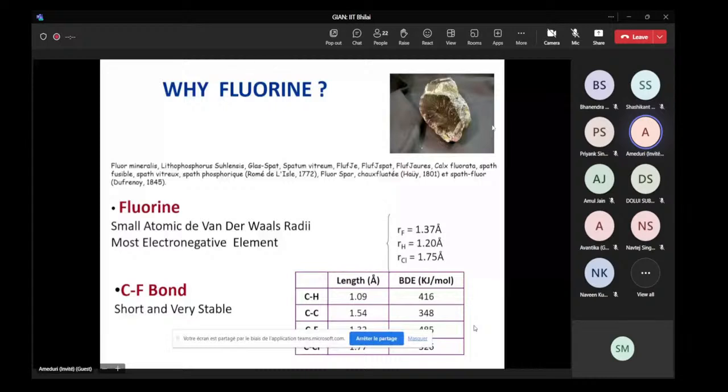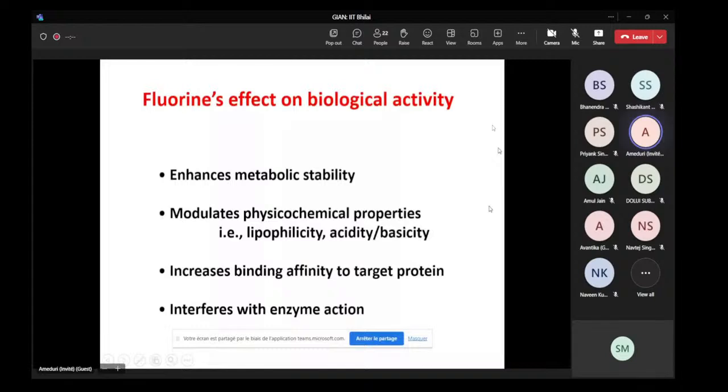So, the fluorine effect also has some influence on the biological activity. It enhances metabolic stability, modulates physicochemical properties, just like the lipophilicity, the acidity, basicity. And lipophilicity is very important because if you have to absorb in a body some specific biomolecules containing fluorine, it has to be lipophilic. And the presence of a CF3 or fluorine atom induces an enhancement of the lipophilicity. Fluorine also increases binding affinity to target proteins. I'm not an expert in this area, but I know that Beate Koksch in Germany has been doing a lot of fluorinated proteins. And also, fluorine interferes with enzyme action. So, you see that fluorine has a lot of consequences, good consequences for biology and medicine.